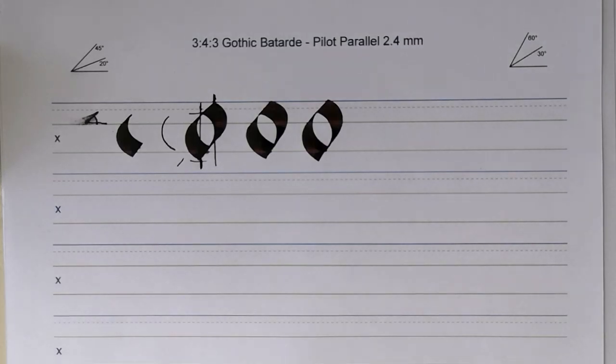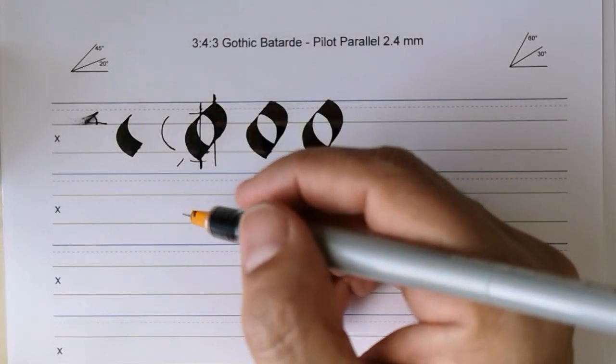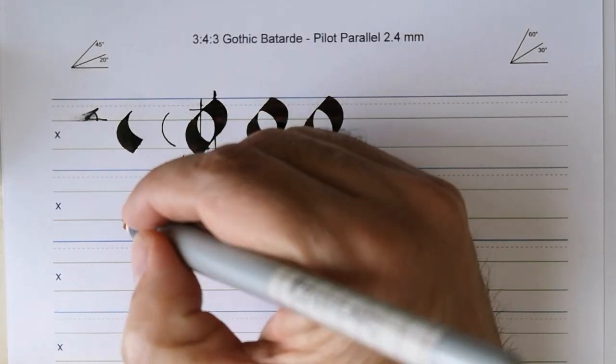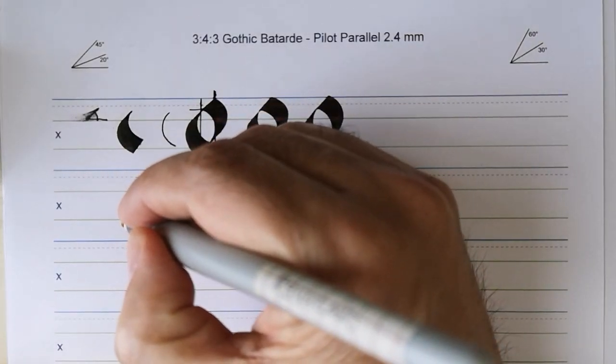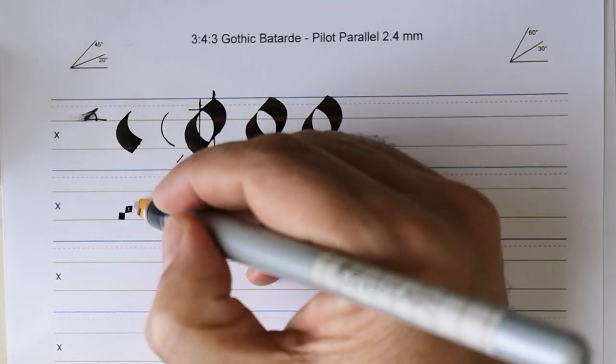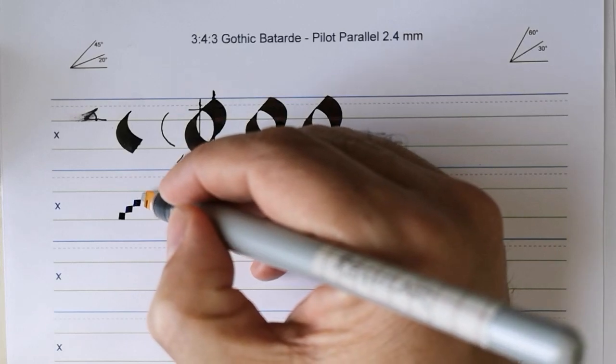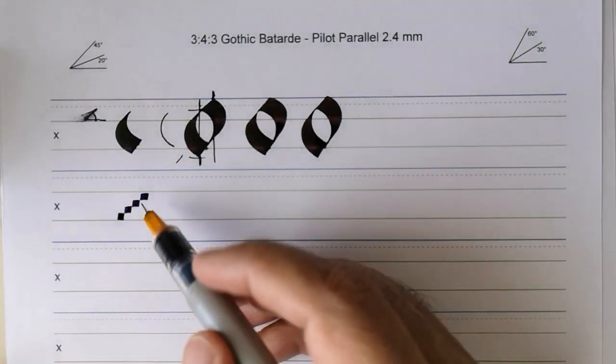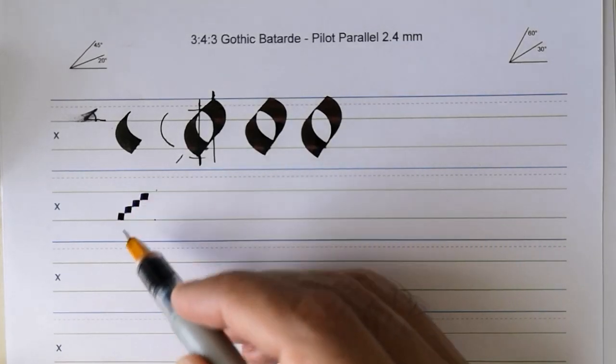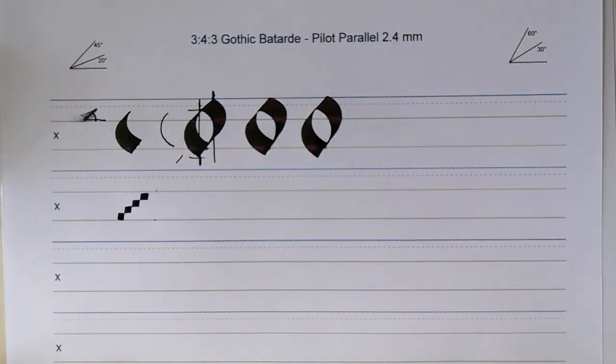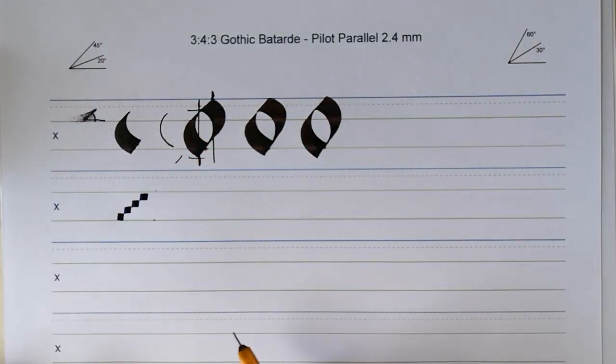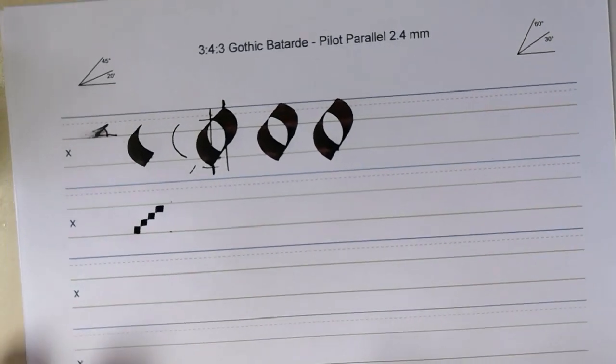The proportions for broad edge scripts in western style of writing are measured in nib widths. So if I draw a short line like this this is one nib width tall and if I stagger a few of them kind of making a staircase we see that the distance between these two green lines is four nib widths.